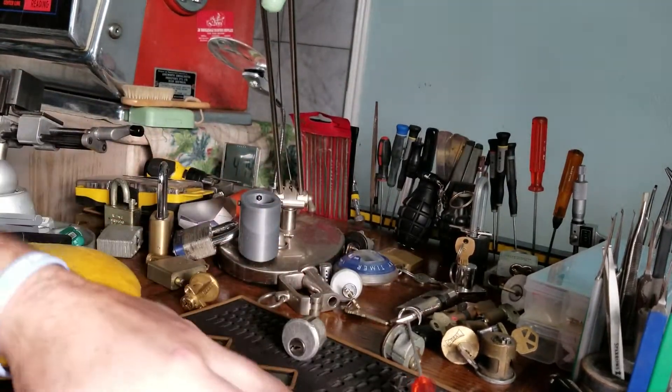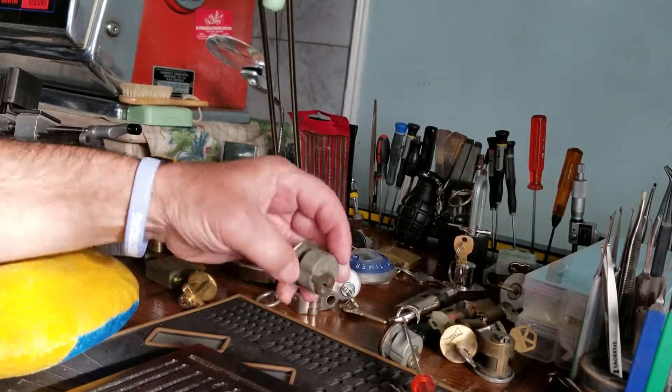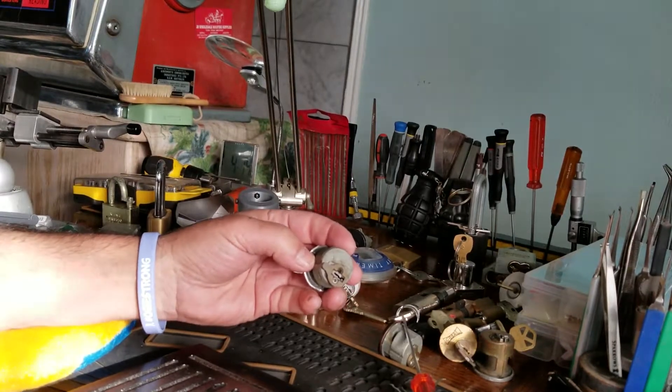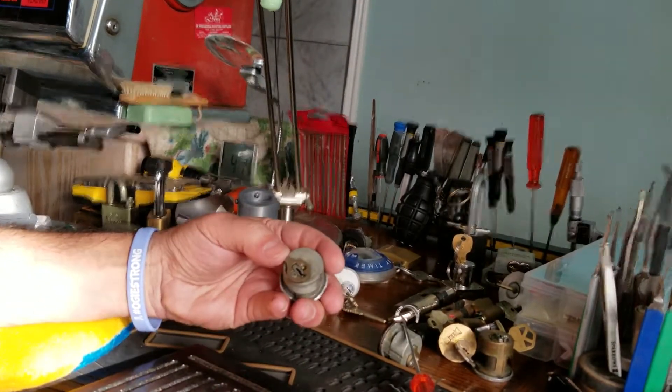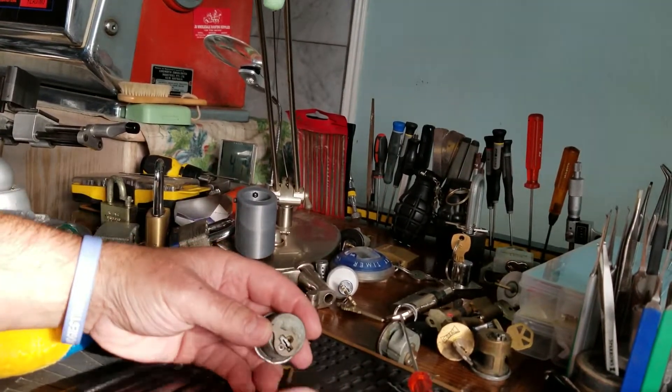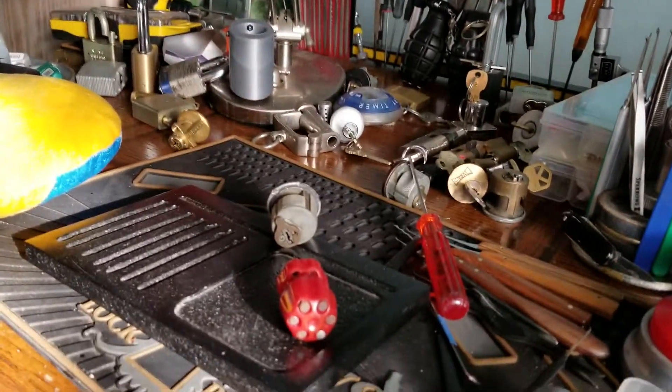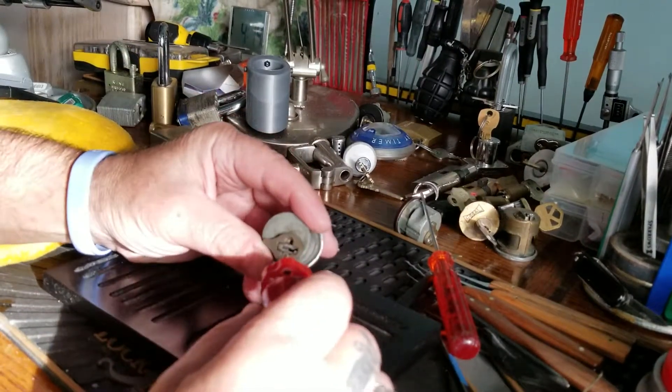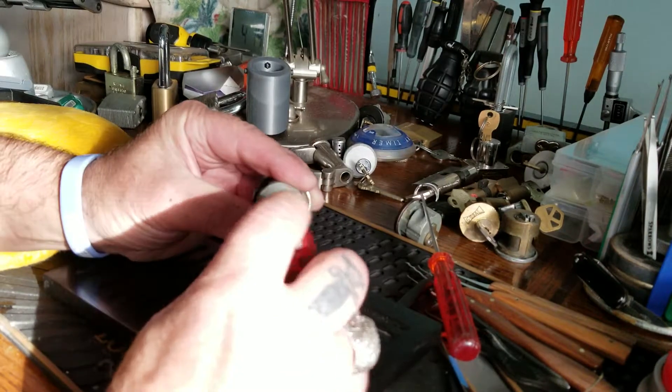I have no idea where this lock came from, so if any of you guys know, if you sent it to me, please let me know. I do not have a key to it. That's a little Phillips head. No end frame here. Let me just knock it down a little bit. Okay. It's got one screw in it, kind of weird.